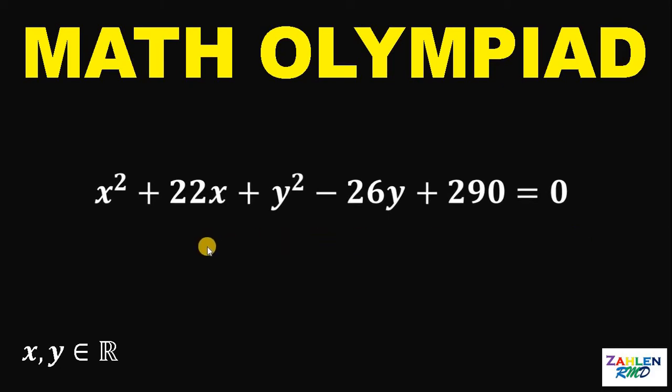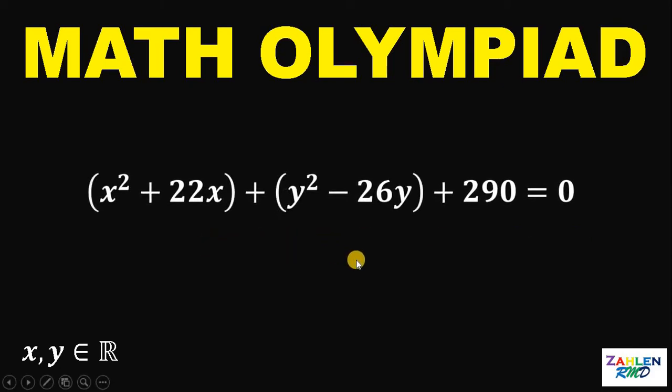Now, let's group all terms having x and all terms having y. Now, this grouping tells us that we need to add something to make this polynomial a perfect square trinomial.